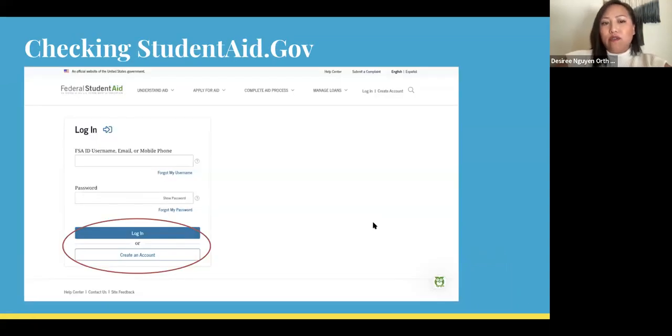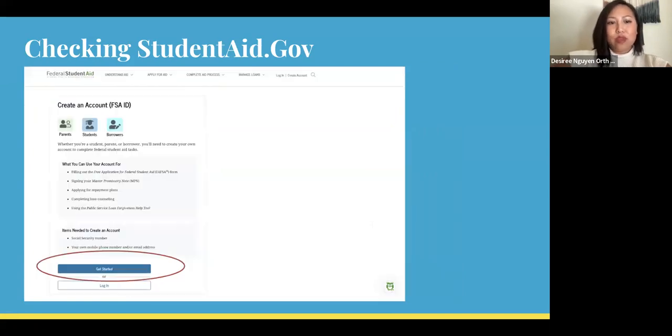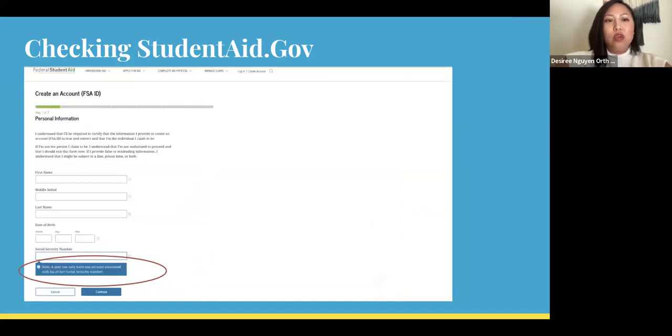When you're checking into studentaid.gov, you'll log in and you'll see this screen. The screen will allow you to either log in or create an account. If this is your first time logging in, you will create an account. When you hit create an account, it'll take you to this information page where you'll click get started. You should note that only one social security number can be associated with an account. So if you have previously opened an account, you'll be prompted to log in instead. Use your username, email address, or phone number associated with the account and click forgot password to follow the steps to recover your account.